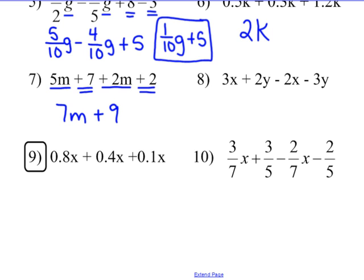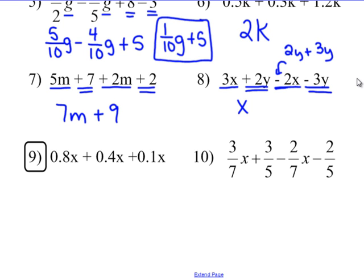Number 8: Looking for like terms — I have 3x minus 2x. Notice the sign: it is minus 2x, so bring along that sign. 3x minus 2x gives me 1x, which I can just write as x. Then 2y's take away 3y's: using add the opposite, 2y and negative 3y combine to give negative 1y. I can show the 1 or not — x minus y means 1x minus 1y.